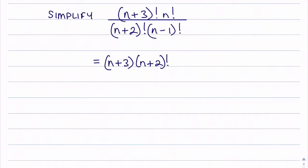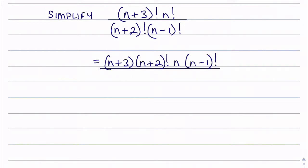Looking at the other terms I've got an n factorial and an n minus 1 factorial. So the numerator here — this n factorial — can be written as n multiplied by n minus 1 factorial. And obviously that is all over the original denominator of n plus 2 factorial multiplied by n minus 1 factorial.